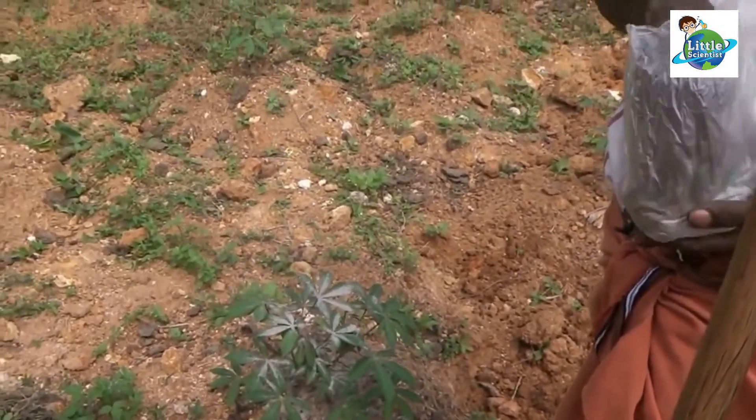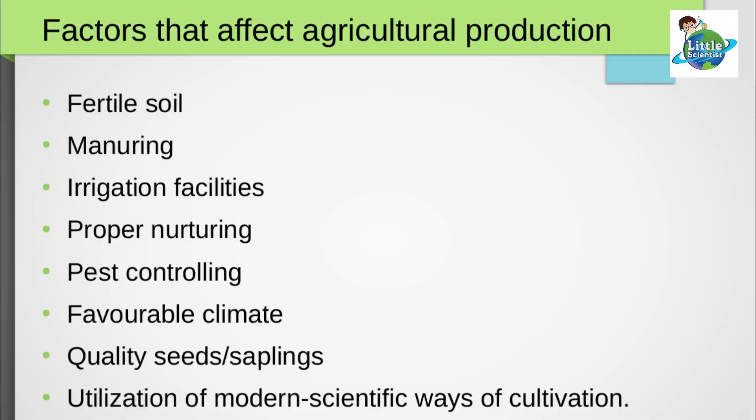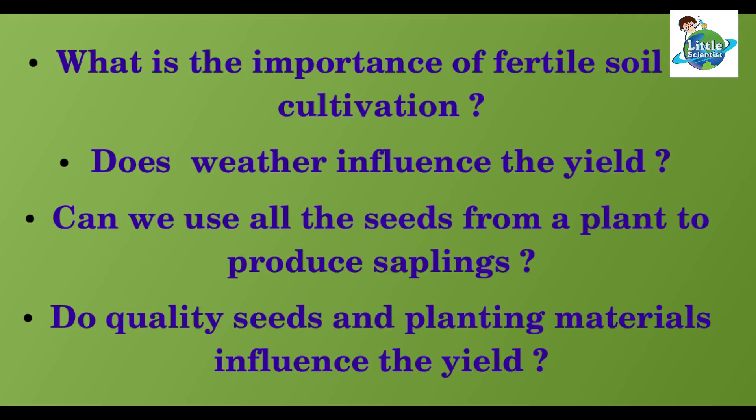pest controlling, favorable climate, quality seeds and saplings, and utilization of modern scientific ways of cultivation. Let us discuss: What is the importance of fertile soil in cultivation? Does weather influence the yield? Can we use all the seeds from a plant to produce saplings? Do quality seeds and planting materials influence the yield? Now we can go through each point in detail.